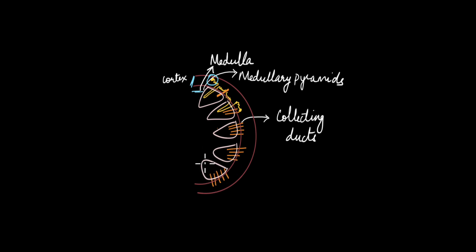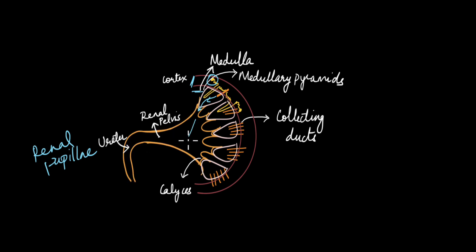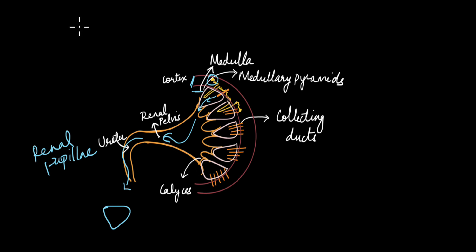Many collecting ducts empty into the medullary pyramid. At the tip of the medullary pyramid — known as the renal papillae — urine is collected by the calyces, the projections of the renal pelvis. From the collecting duct into the medullary pyramid, then into the calyces, all converging to form the renal pelvis — that is how urine travels. From the renal pelvis, urine passes out through the ureter to the urinary bladder. This is how nephrons are oriented within the kidneys, and this covers the anatomy of both the kidneys and the nephrons. We will explore kidney function in future videos.